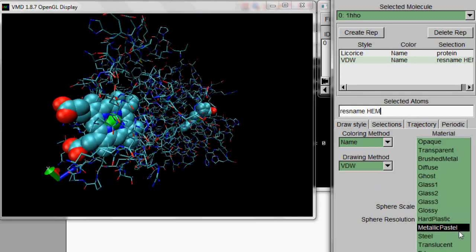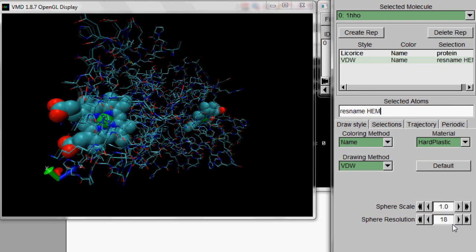And the green guy in the middle, that's the iron. That's where the oxygen binds. And that's what gives your blood its red color.